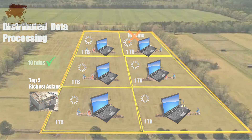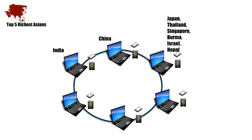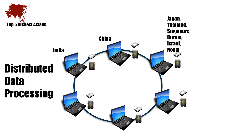Practically, we take our six machines, connect them over a network, and distribute different portions of Asia's data to each machine. One machine works on India's data, another on China's, a third on Japan, Thailand, Singapore, Burma, and so on. The other machines work on the remaining countries of Asia. This is called distributed data processing, and this group of machines is called a cluster.